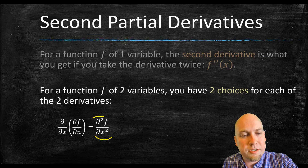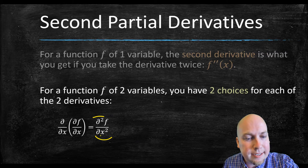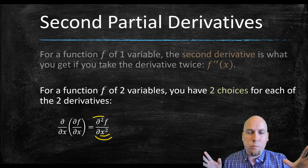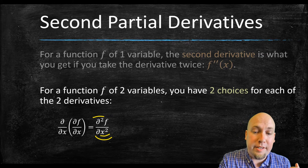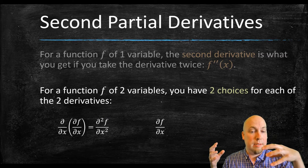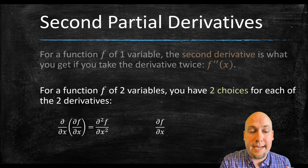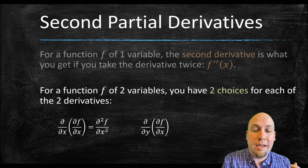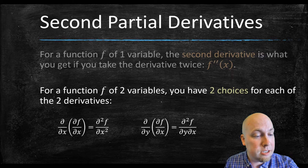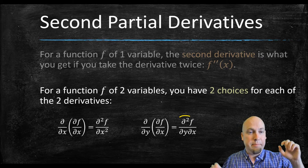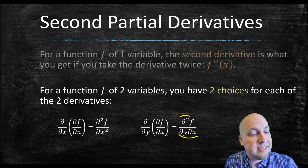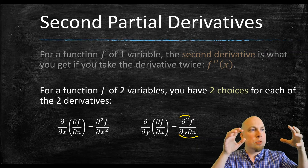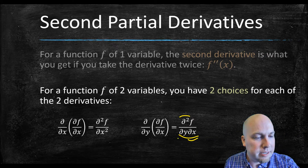But we didn't have to proceed that way. We could take the derivative with respect to x the first time, and then take the derivative with respect to y instead. This gives us something called a mixed partial derivative. The notation is del squared f over del y del x, and importantly this is read from right to left — meaning you first took the partial derivative with respect to x and then took it with respect to y.